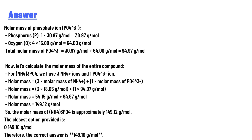Now let's calculate the molar mass of the entire compound (NH₄)₃PO₄. We have 3 NH₄⁺ ions and 1 PO₄³⁻ ion. Molar mass = 3 × 18.05 g/mol + 1 × 94.97 g/mol = 54.15 + 94.97 = 149.12 g/mol.